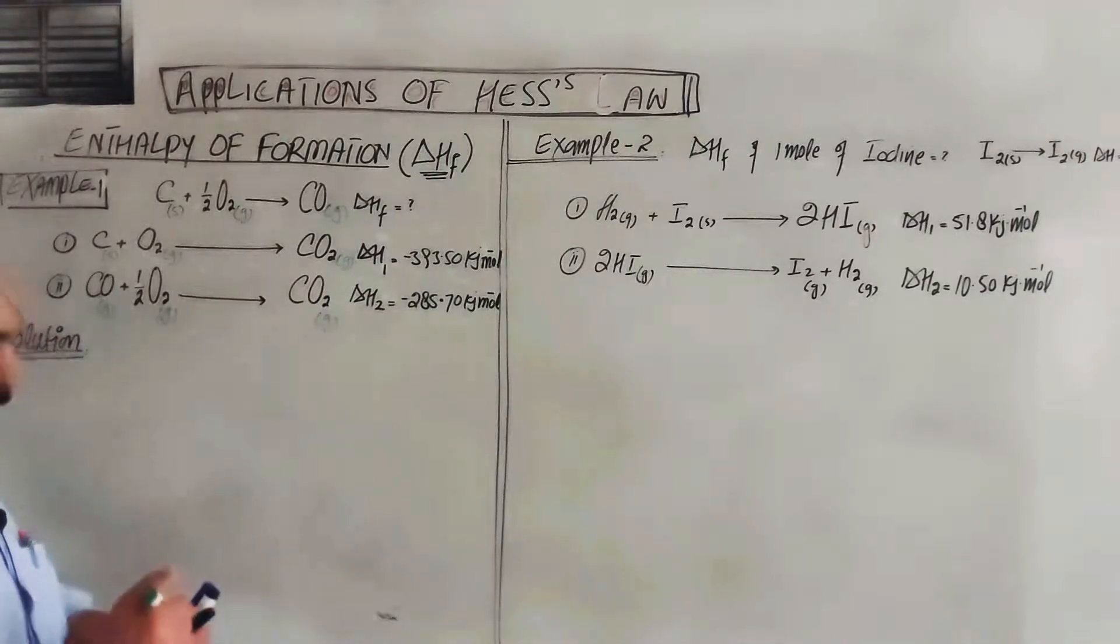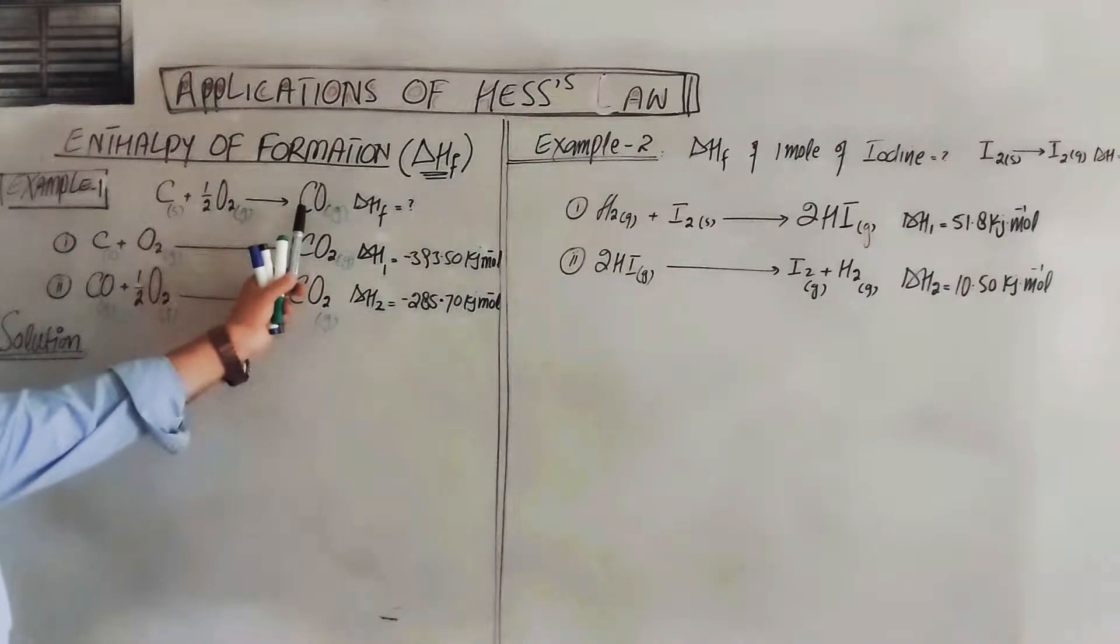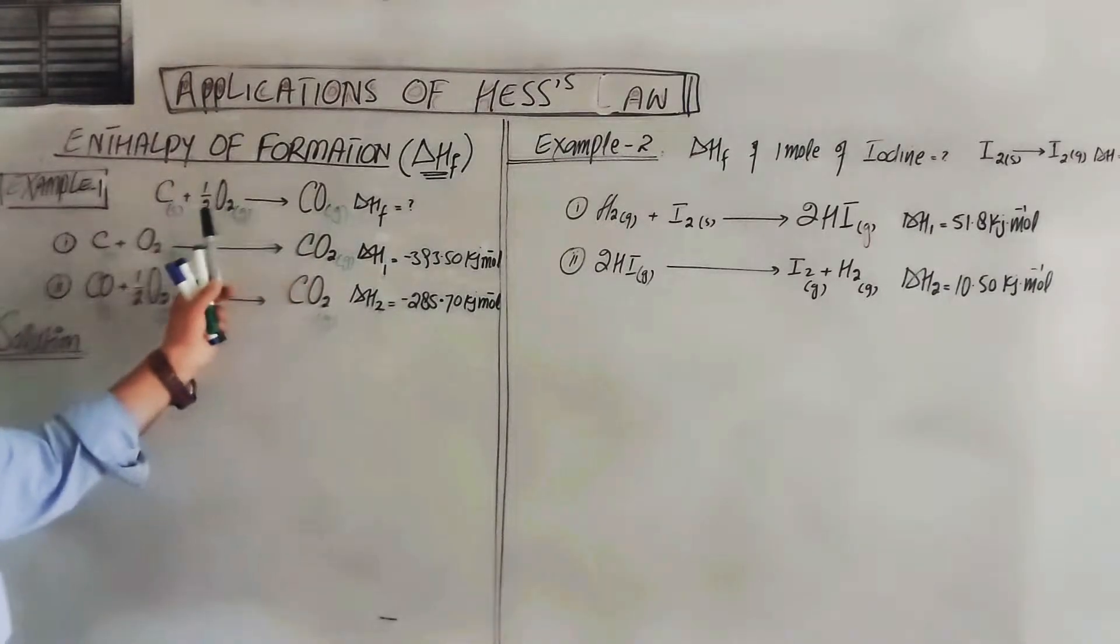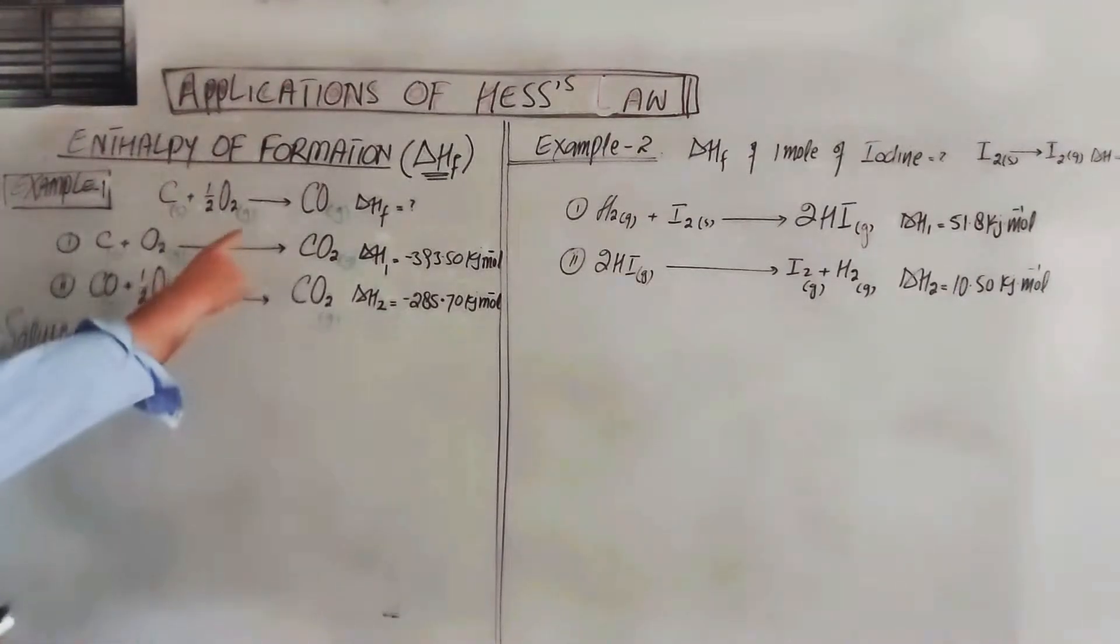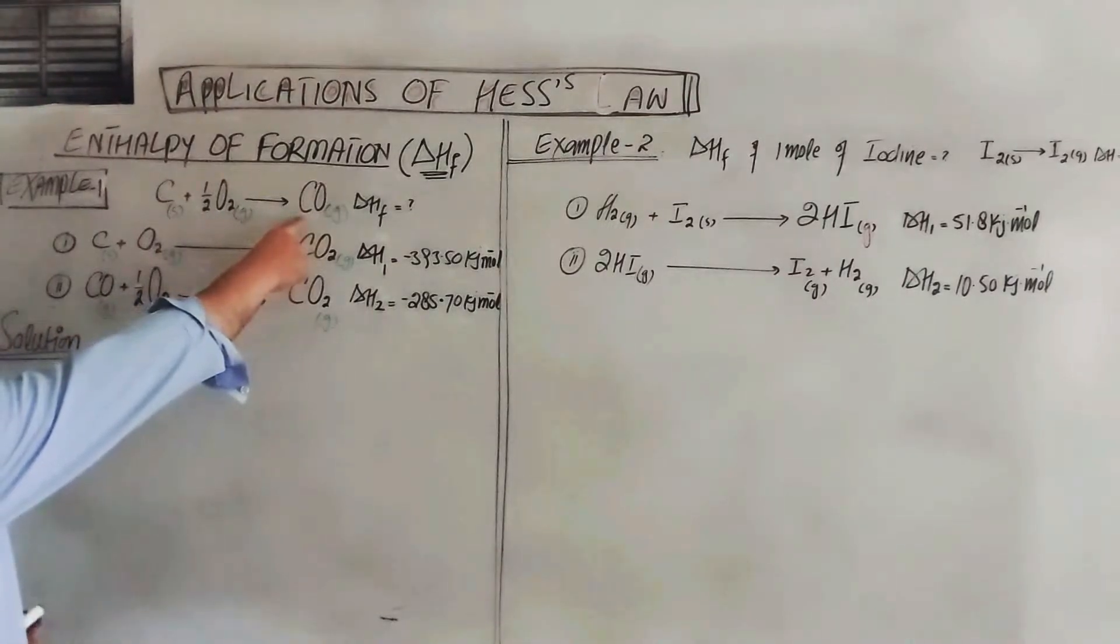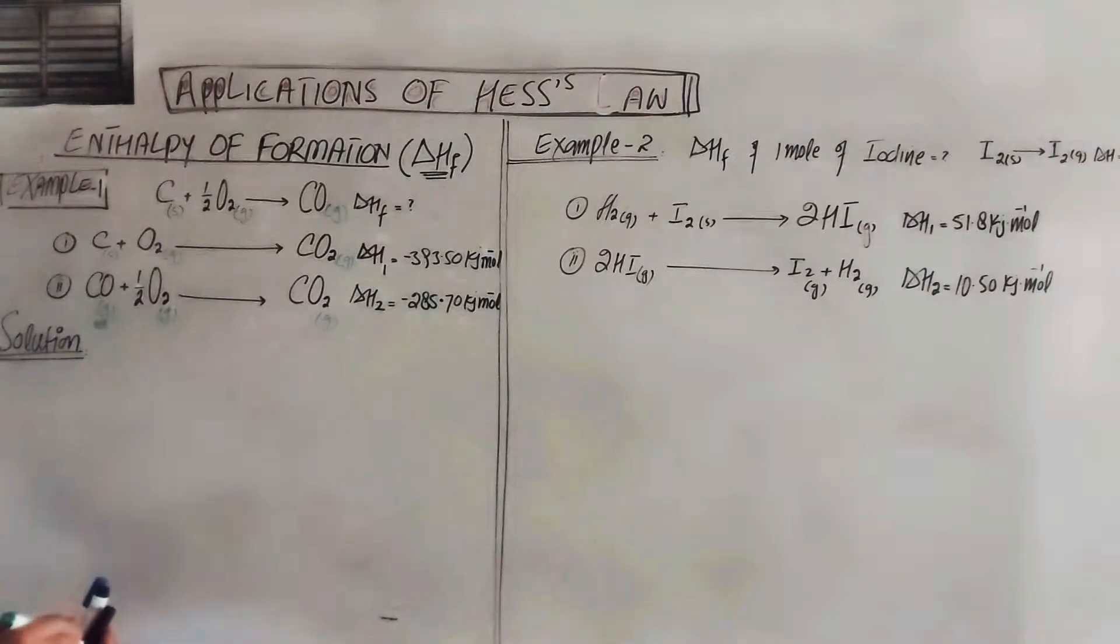The negative sign indicates that this is an exothermic reaction. Now we have to find enthalpy of formation of CO from oxygen and carbon. Carbon is in graphite form in its standard state. Carbon monoxide should be on the right side, so we keep it on the right side, and on the left side it should be carbon.